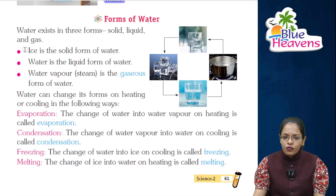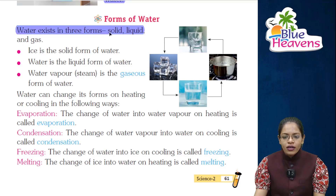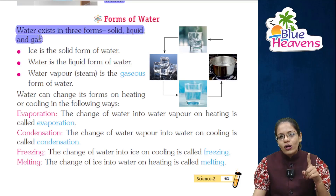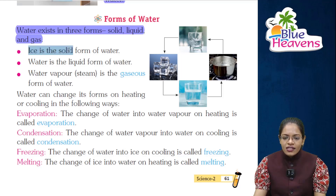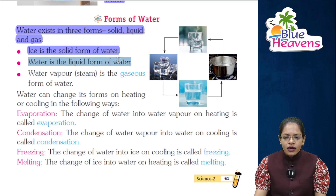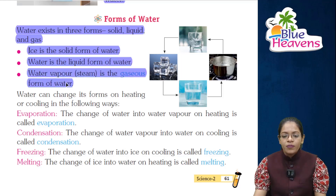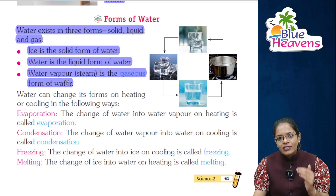Next is the forms of water. Water exists in three forms — solid, liquid, and gas. Ice is the solid form of water. Water is the liquid form of water. Water vapor, meaning steam, is the gaseous form of water.